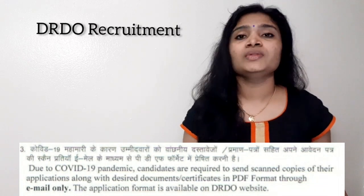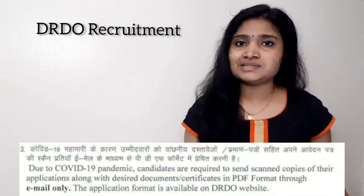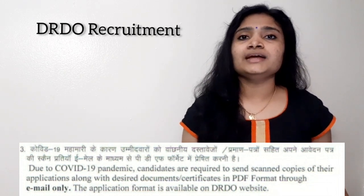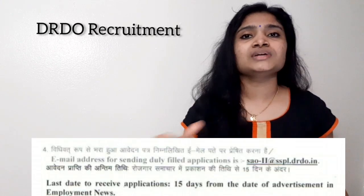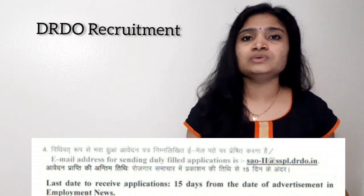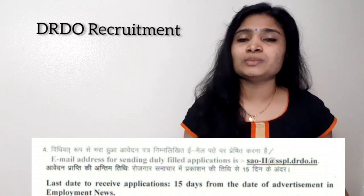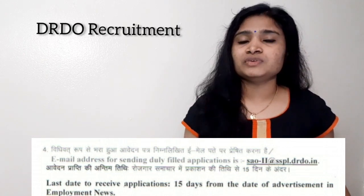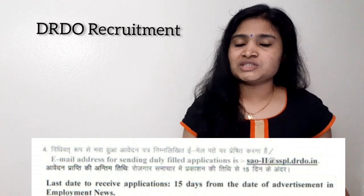For the application procedure, towards the end of the notification you can see an application form. You have to download that form, print it, fill it up, then scan it and convert it to PDF format. Along with all your necessary certificates, you have to mail these documents and the application form to the given mail ID. Application is through email only - all documents should be converted to a single PDF file.